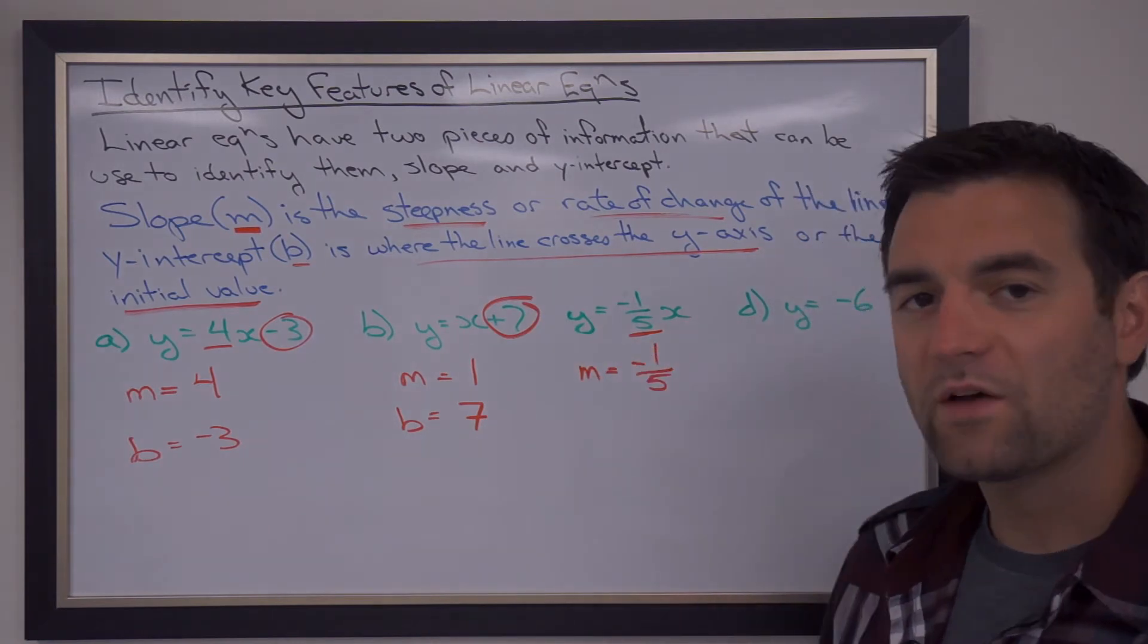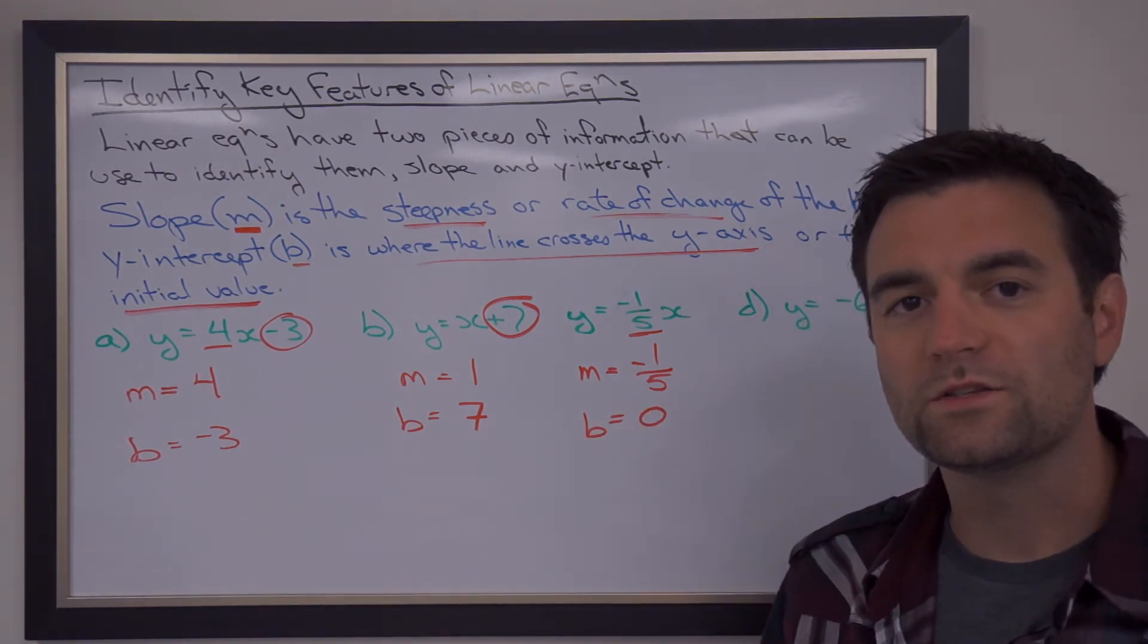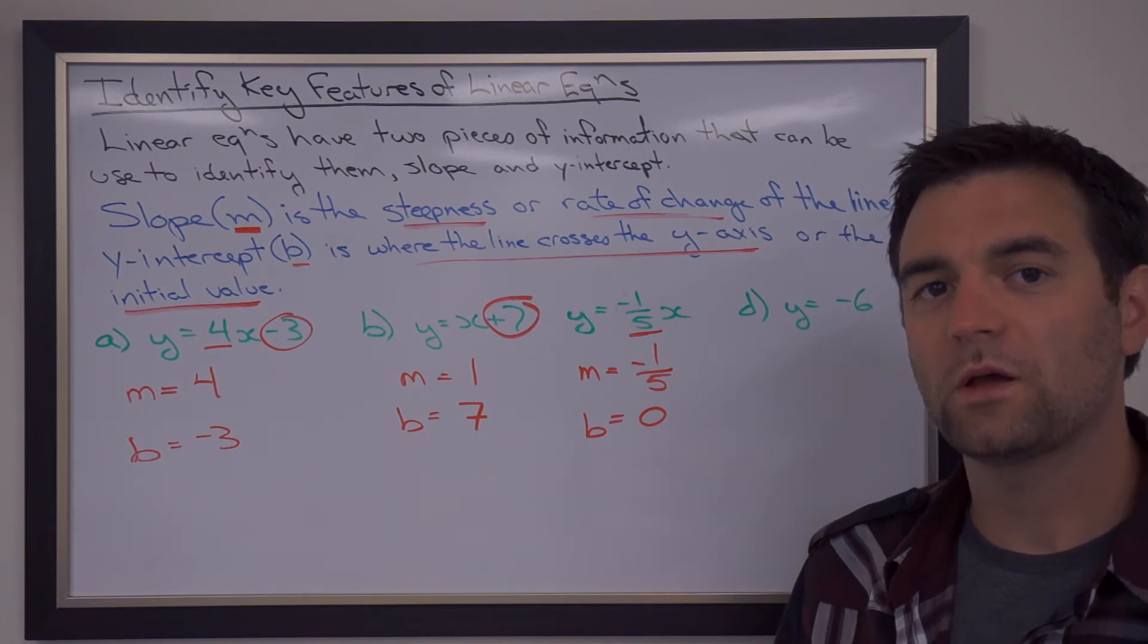But we don't have a B value. There is no B value there, so we put it down as 0. When it's not there at all, that's when it becomes 0.